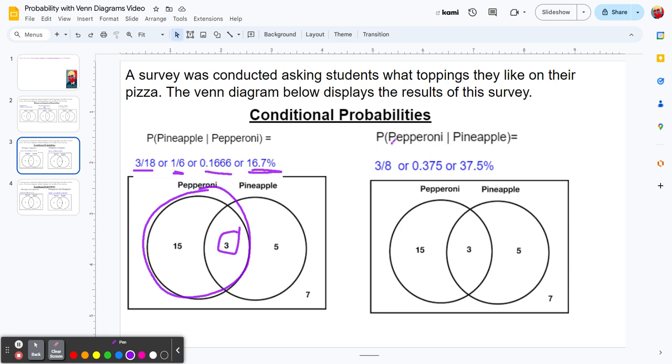How about this one? The probability someone likes pepperoni on their pizza, given we know they like pineapple. On this one, our given condition is they like pineapple. There's 8 people in that condition. Of those 8, how many also like pepperoni?